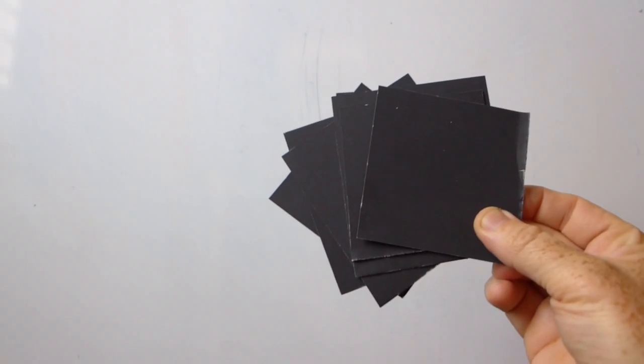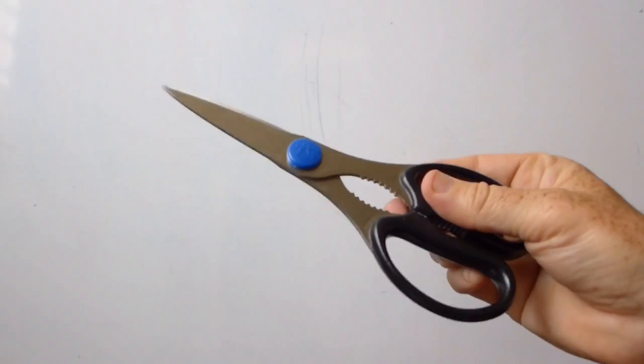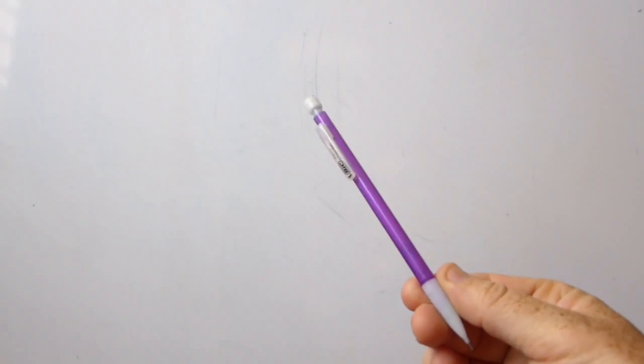Okay guys, so today we're going to be making some cool-shaped bokeh, and to do that we're going to need some things. I've got some black paper here, an X-Acto knife or razor, scissors, tape, and a pencil.